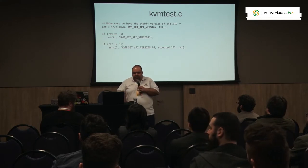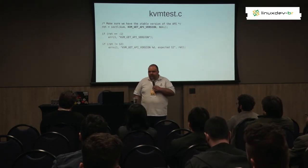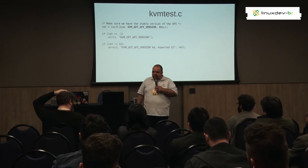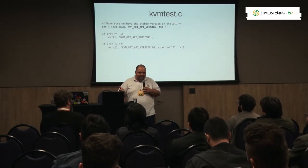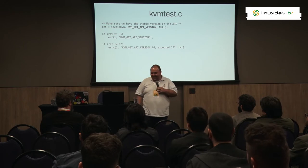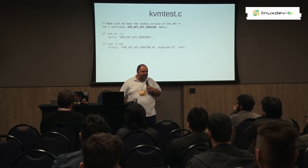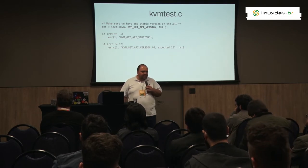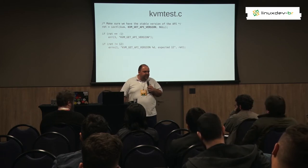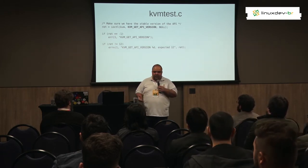The code checks for the return from the IOCTL. The GET_API_VERSION API returns the version number, and it compares against 12, which was the last bumped number for the KVM. If it matches, it is a stable KVM host that your application is talking to.